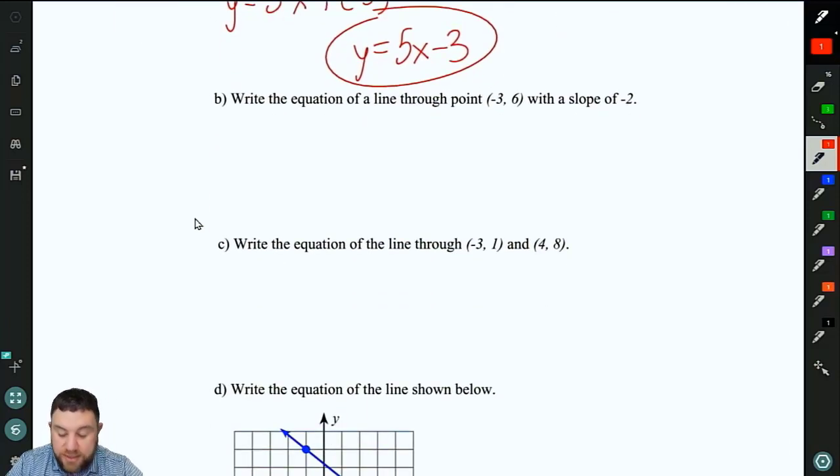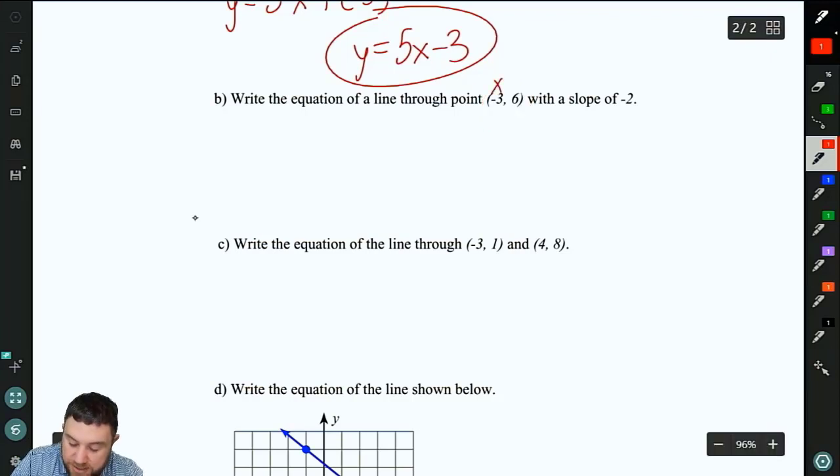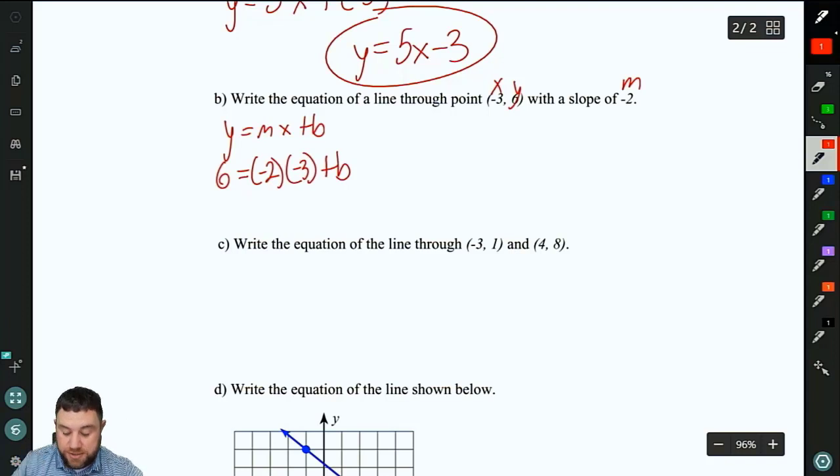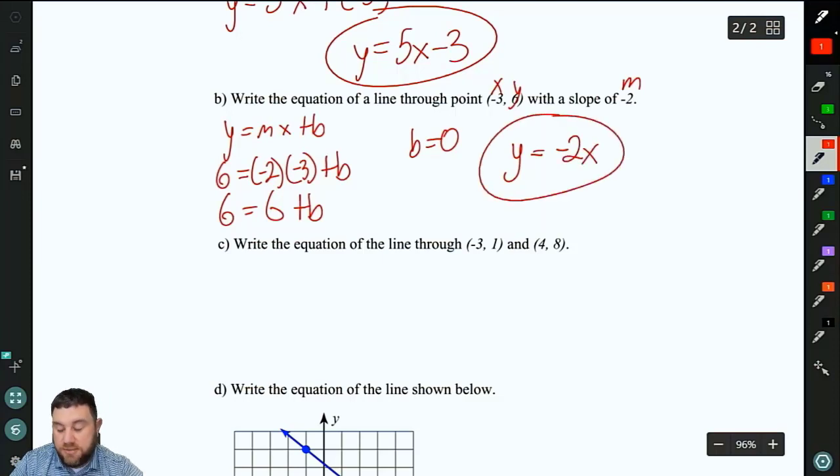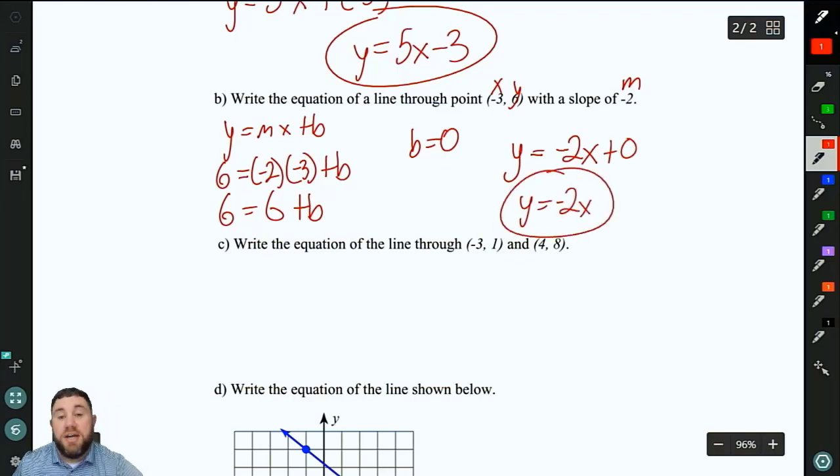For b, here we don't have the y-intercept. We have another point. So we need to find our y-intercept. Remember, that's x. That's y. Our slope is negative 2. So we plug those in to y equals mx plus b, and we'll be able to solve for b. So our y is 6. m is negative 2. x is negative 3. And then we don't know b, so we just write plus b. 6 equals 6 plus b. So b equals 0. We subtract 6 from both sides. So we have y equals negative 2x. And technically, it's x plus 0, but again, that's not something we usually write. So y equals negative 2x.